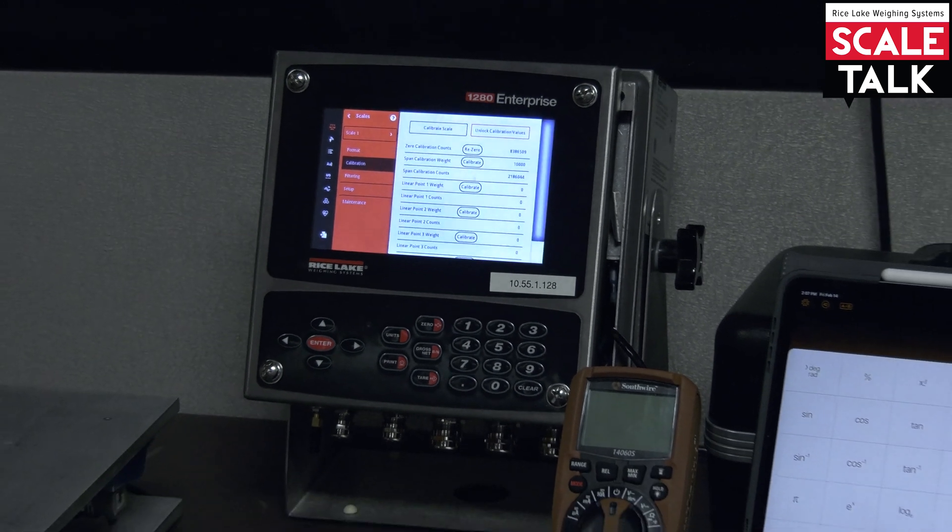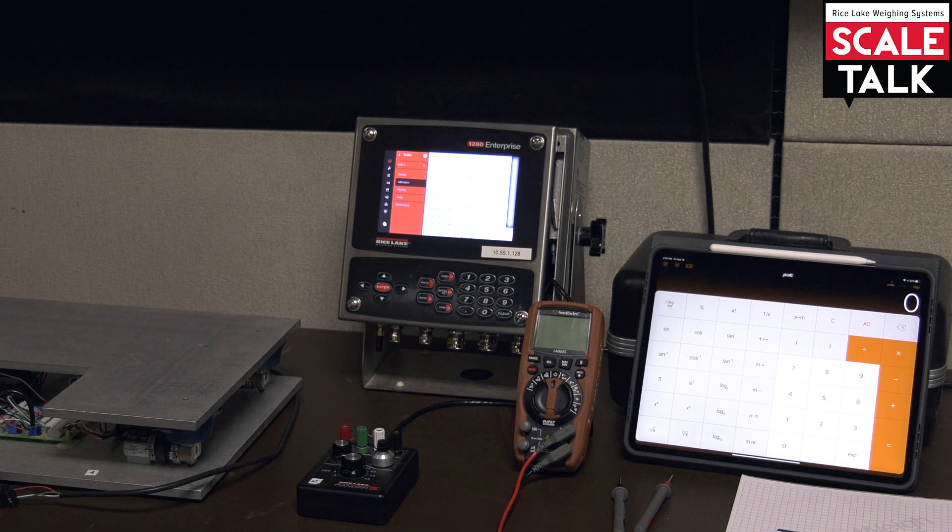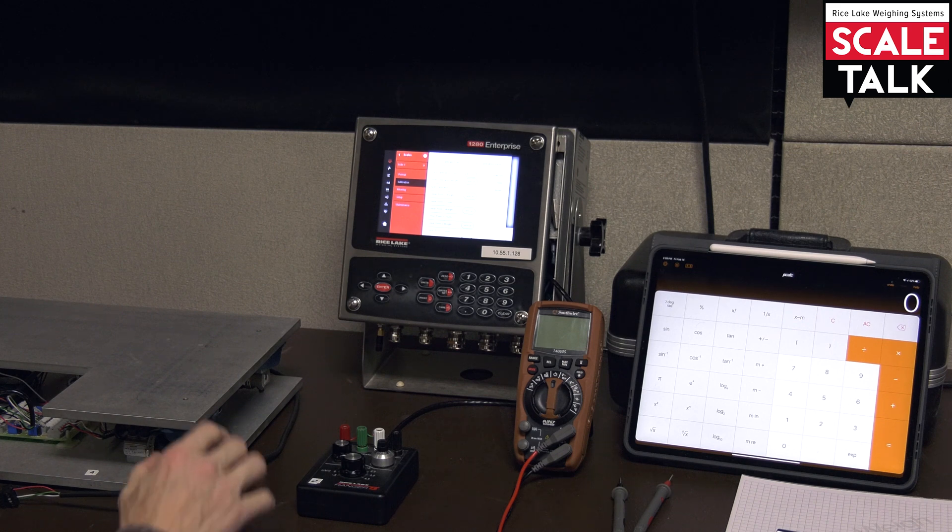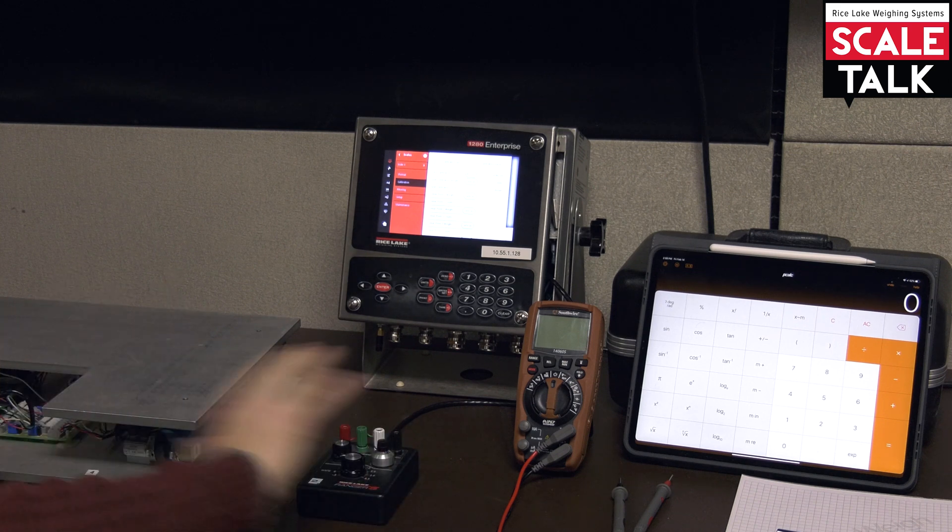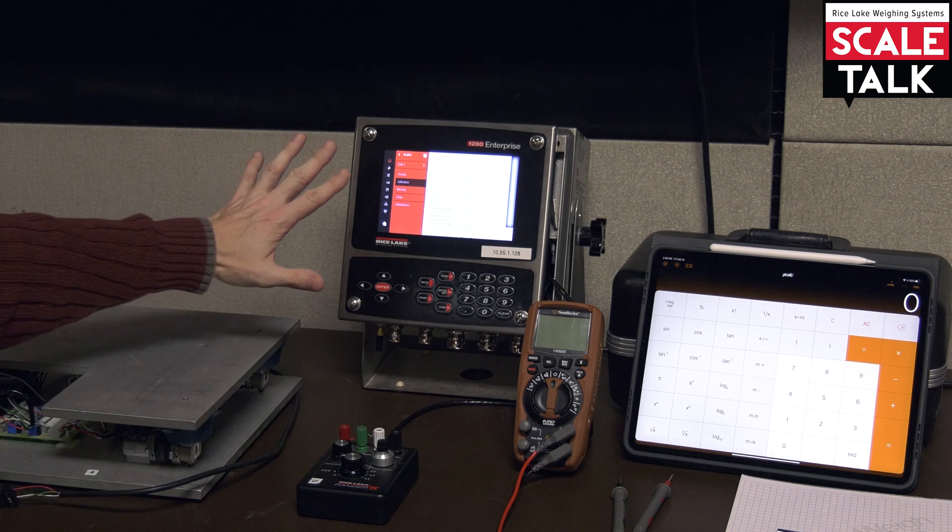Now in order to calibrate with a simulator there's some additional information that we need to know. While this might be the least accurate, it's not the same as simply going from zero to span on the simulator. It's probably one of the more difficult methods of calibration even though it's the least accurate because it involves getting some data and doing some math.